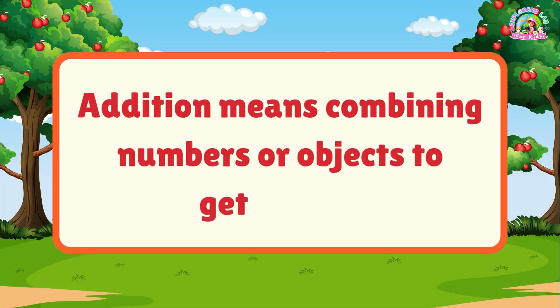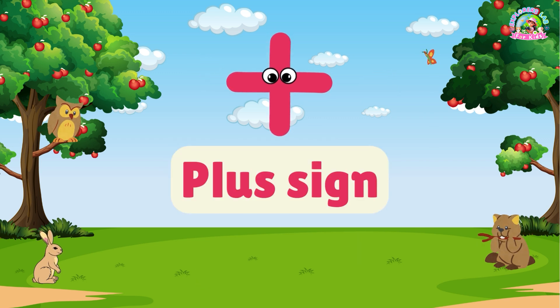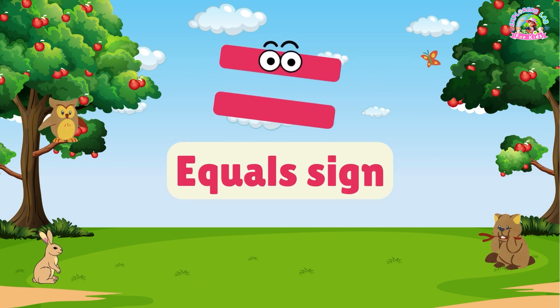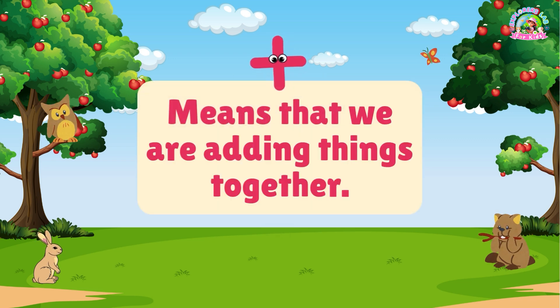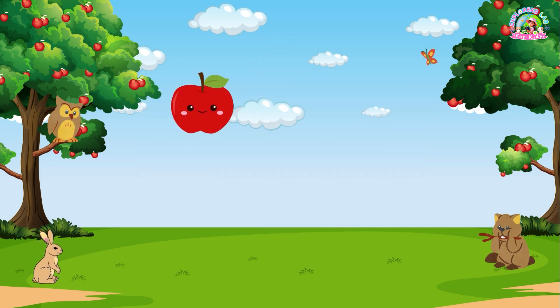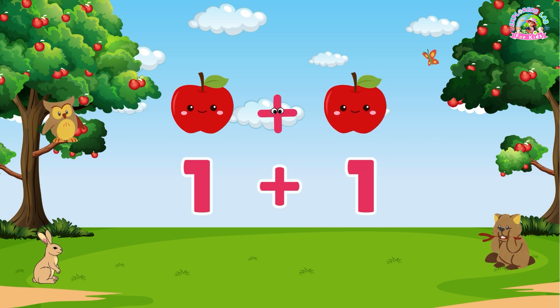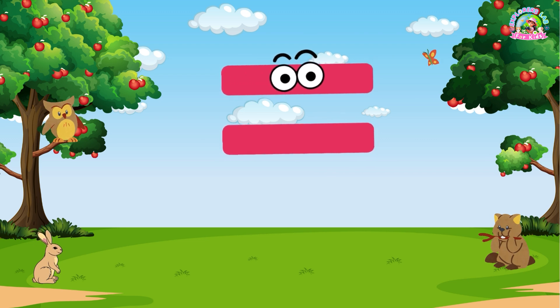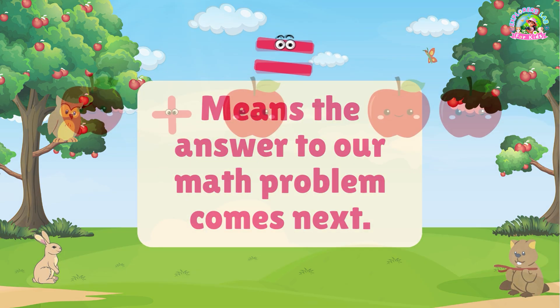Addition means combining numbers or objects to get a total. Let me introduce you to two very important math symbols: the plus sign and the equal sign. The plus sign means that we are adding things together. For example, if I have one apple and add one more, we write it like this: one plus one. And this symbol is called the equal sign.